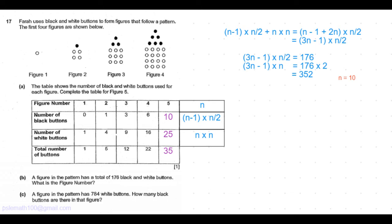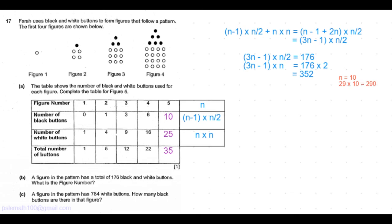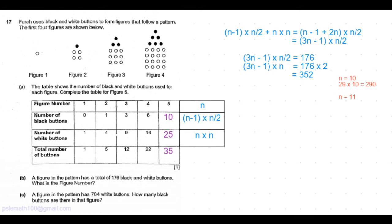So first let's check the actual value of n to be equal to 10. 3 times 10 is 30, 30 minus 1 is 29, 29 times 10 is 290, but we need 352. So let's increase the value of n to be equal to 11. Let's check 11.